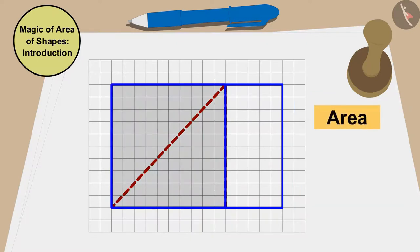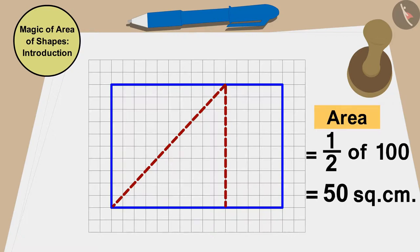The area of this square is 10 times 10, 100 square centimeters. Therefore, the area of these two triangles is exactly the same as half or 50 square centimeters of this square.